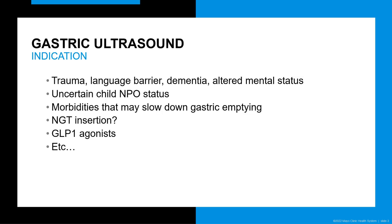What are the indications for gastric ultrasound? It is really to assess the patient when there is an unclear prandial state. Most commonly that may be a trauma patient, a patient with a language barrier, or altered mental status. Also, we all have had a child coming in for surgery where there is a question as to whether or not they are truly NPO. You may also have a patient with morbidities that slow gastric emptying, or you may want to verify NG tube placement.